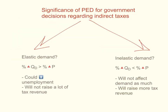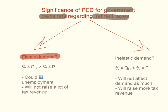The last real-world application is how price elasticity of demand affects government decisions when it comes to imposing indirect taxes — taxes imposed on goods and services, not on income. When a product has elastic demand, the percentage change in quantity will be greater than the percentage change in price. So if you impose an indirect tax and it raises the price, it could increase unemployment.